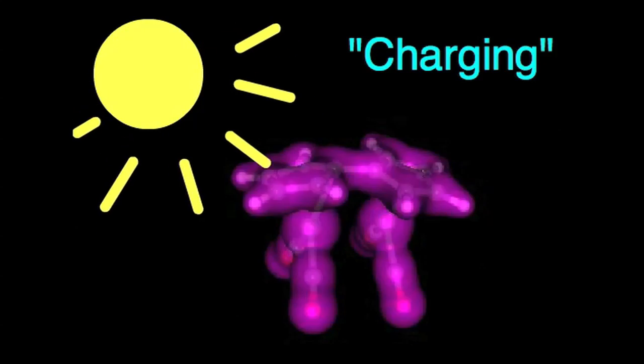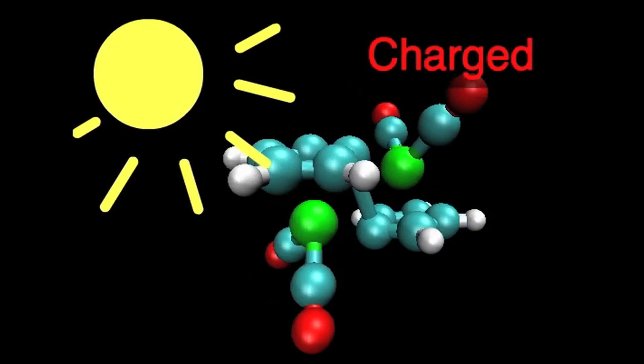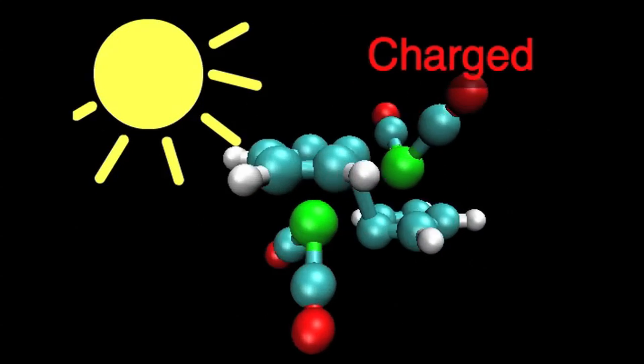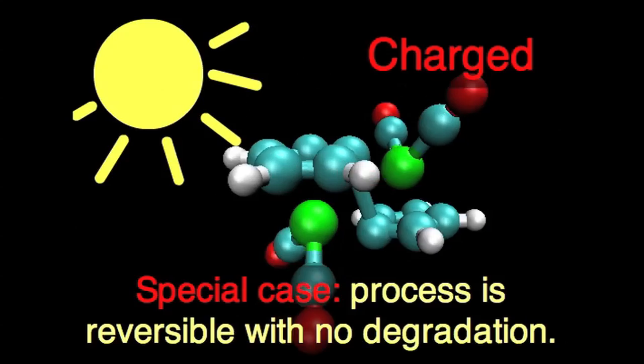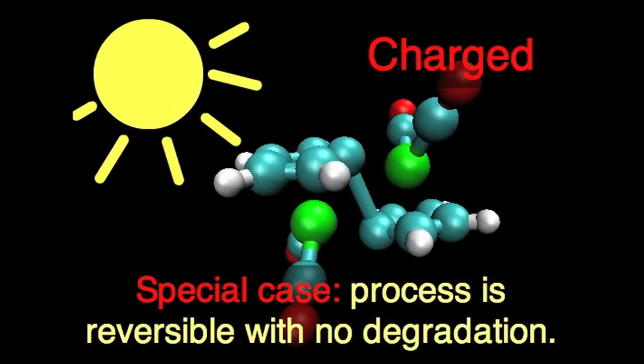So when the sun strikes this molecule, it undergoes a reaction that transforms it into a higher energy state or a charge state. And this particular molecule is a special case. It can do this reaction in a reversible manner with no degradation.